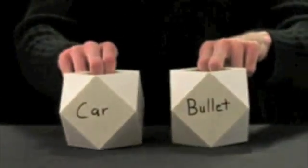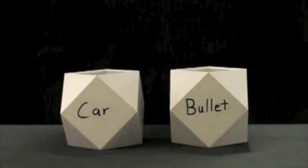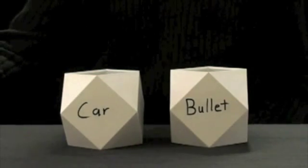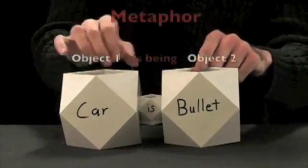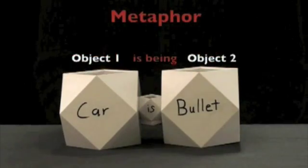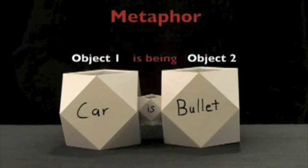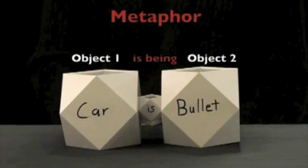Label two blocks car and bullet and place a block between them representing the relationship. If we say that the car is a bullet, we are making a metaphor because we are saying that one object is being or equal to another object in some way.